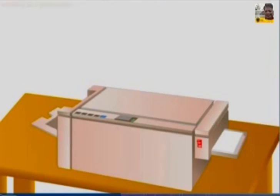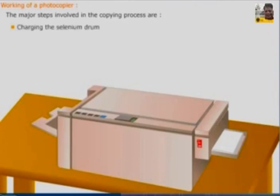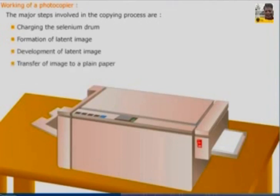Working of a photocopier: the major steps involved in the copying process are charging the selenium drum, formation of latent image, development of latent image, transfer of image to a plain paper, and fusing of toner to the final copy.